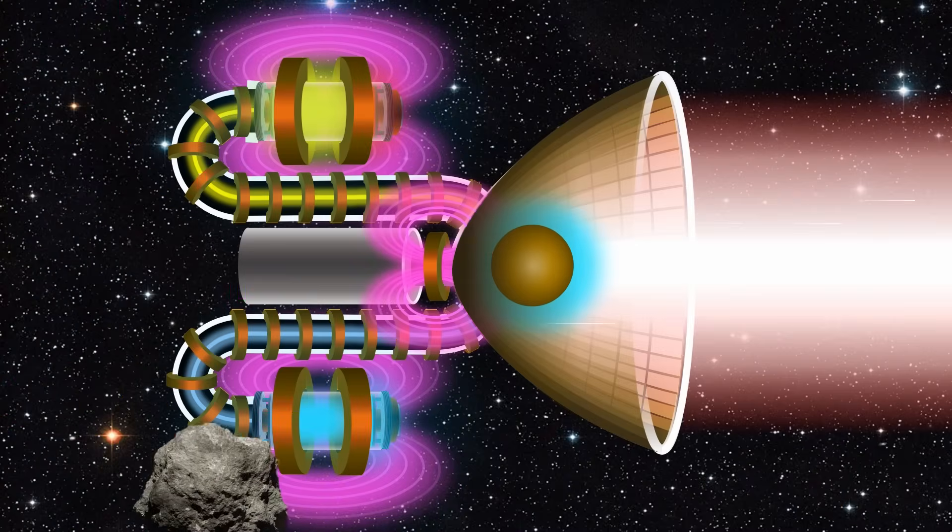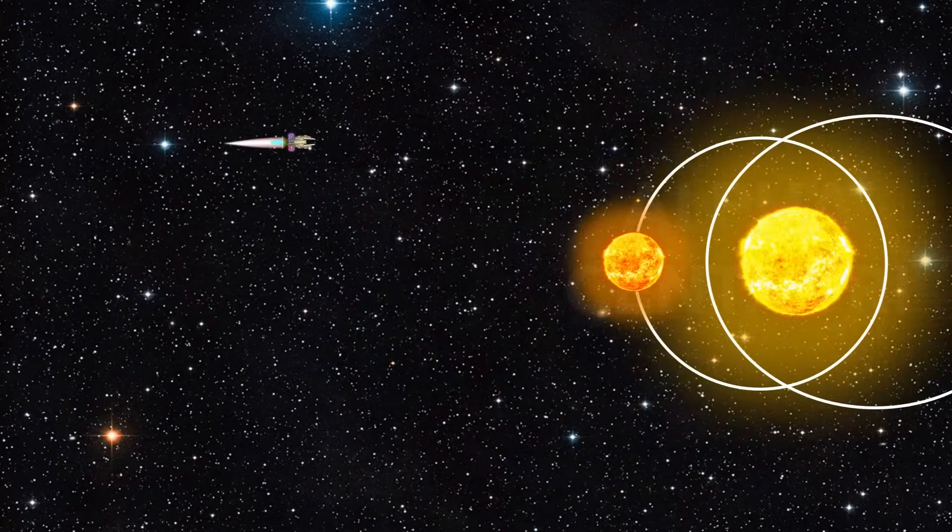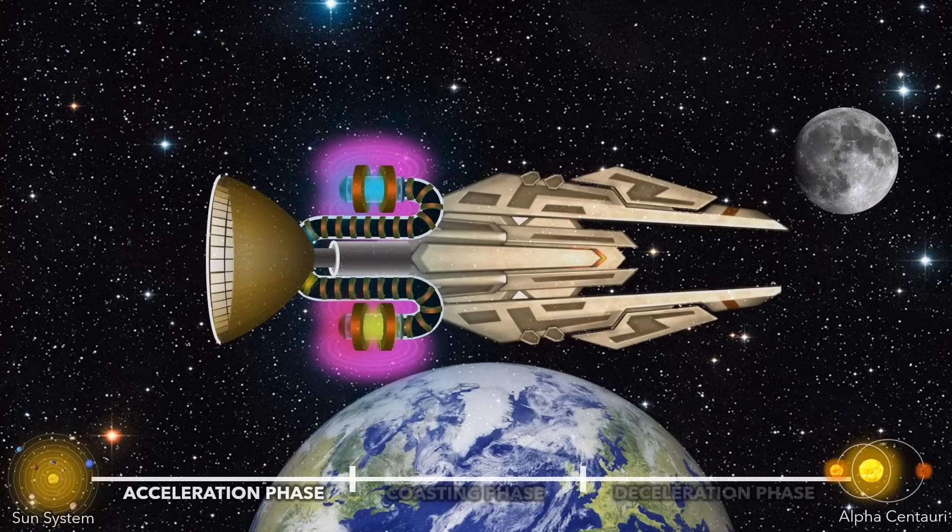So now we have a fully working positron thruster. But how much antimatter would we need for an interstellar mission to our nearest star system, Alpha Centauri? Let's say our ship has the mass of the International Space Station.